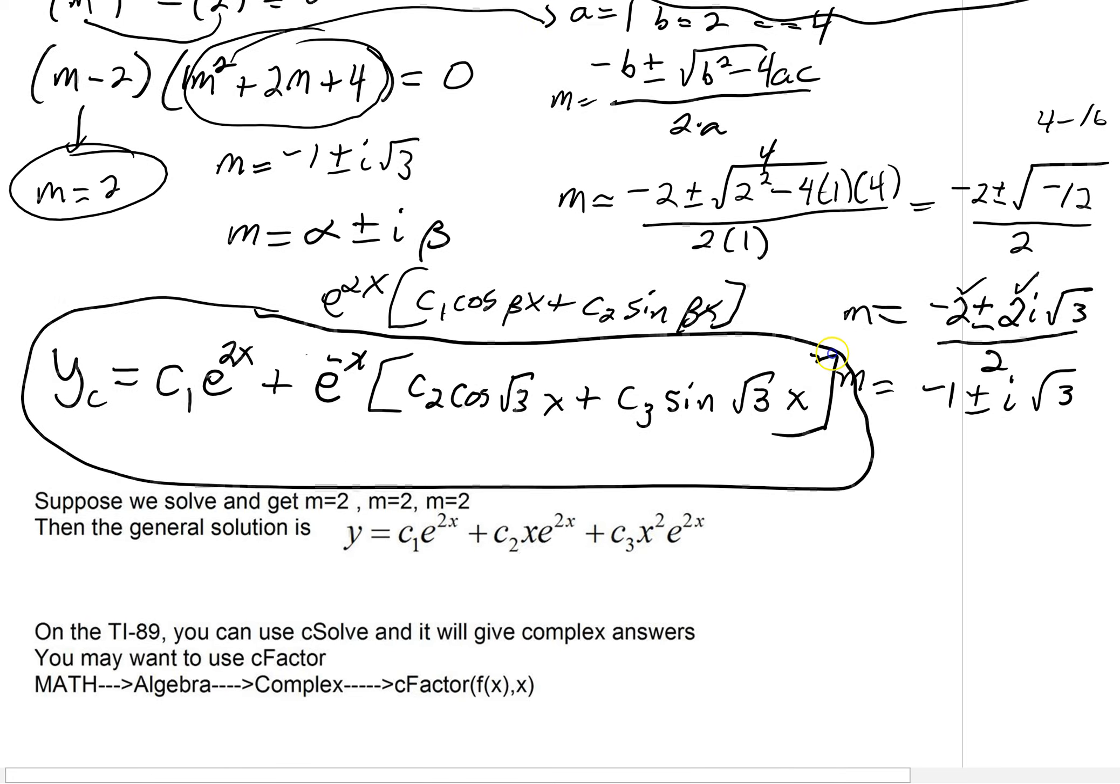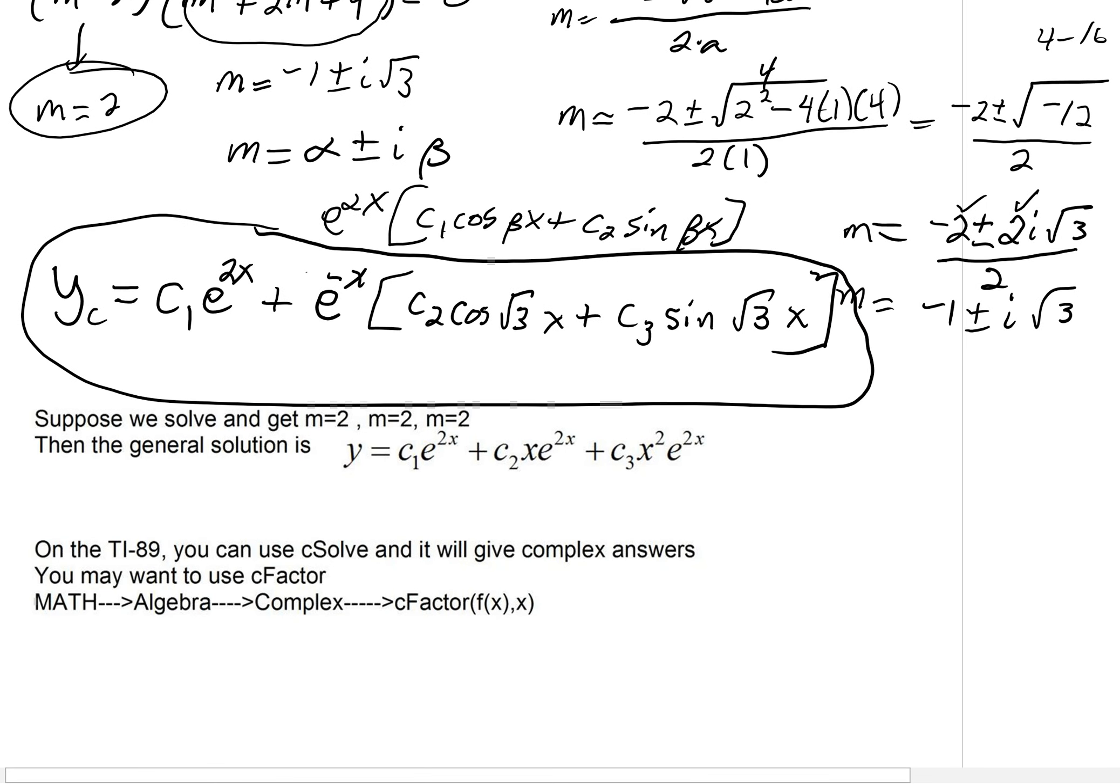A couple other things before we wrap up. Let's just hypothetically say that, wait a minute, you've got not two repeated solutions, but three. What if it's m equals 2, m equals 2, m equals 2? Well, notice how we'd write that. If it was a second one, we would have put an x. What if our answer gets repeated a third time? It would be x squared e to the 2x. And if we'd have four of them, then we'd have a c4, x to the third, e to the 2x. I hope you get the idea.